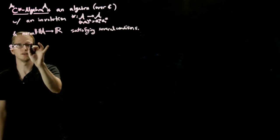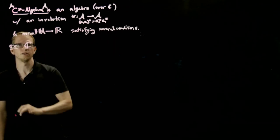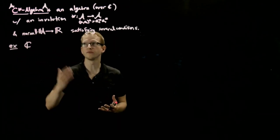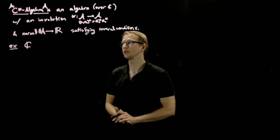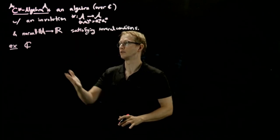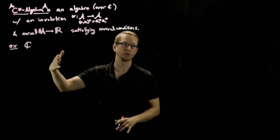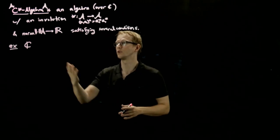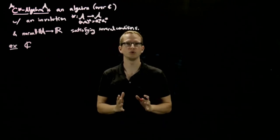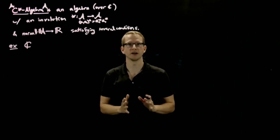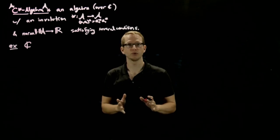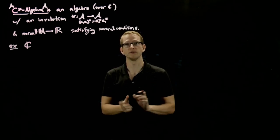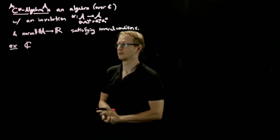The main example is the algebra of complex numbers. The involution is just taking the complex conjugate. It is a vector space — we can add numbers and multiply numbers, so we get an algebra. It's distributive. And the norm is just the usual norm of a complex number: the square root of the sum of the squares of its real and imaginary parts.